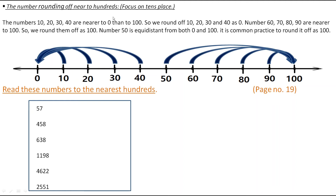Now we focus on the tens place. The number 57 has 5 in the tens place, which means 50 — and 50 rounds off to 100, so the number 57 becomes 100. In the next example, 458 has 5 in the tens place, which rounds off to 100, so the hundreds digit 4 becomes 5 — 458 becomes 500. In the next example, 638 has 3 in the tens place, which rounds off to 0, so 638 becomes 600.